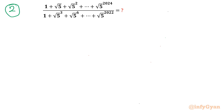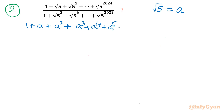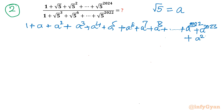Now let us take the second simplification problem. I will solve this problem by two different methods. The first is the common method using the sum of a finite GP, and the second method uses factorization. Let us solve using factorization first. Let me consider √5 = a. So our expression is (1 + a + a² + a³ + a⁴ + a⁵ + a⁶ + a⁷ + a⁸ + ... + a²⁰²² + a²⁰²³ + a²⁰²⁴). Again, I will consider this as the numerator, so I am writing only the numerator.